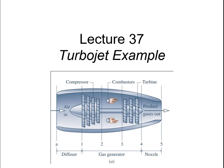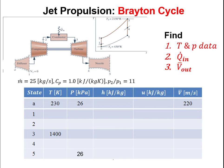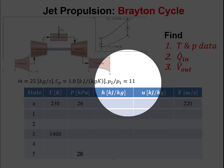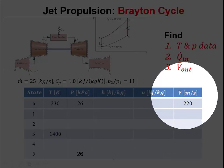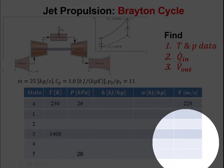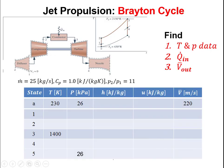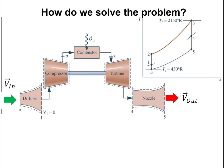Now we'll go through an example for a turbojet engine using both constant specific heat and variable specific heat. We're given the mass flow rate, the specific heat, and the pressure ratio from state 1 to 2 through the compressor. We're asked to fill out our state table, find all relevant temperature and pressure data, find the heat required in the combustor, and find the velocity at the exit, state 5. The inlet velocity V_a is 220 meters per second.